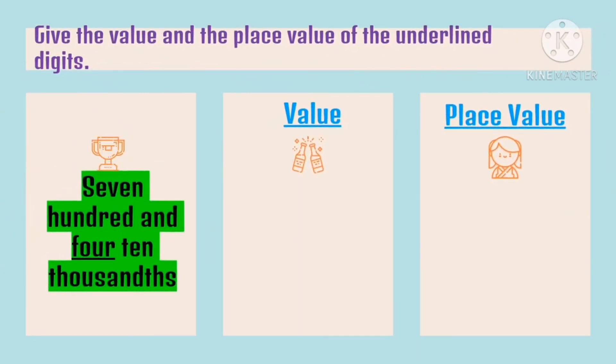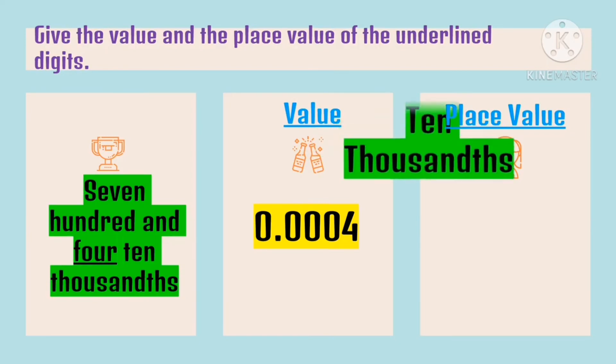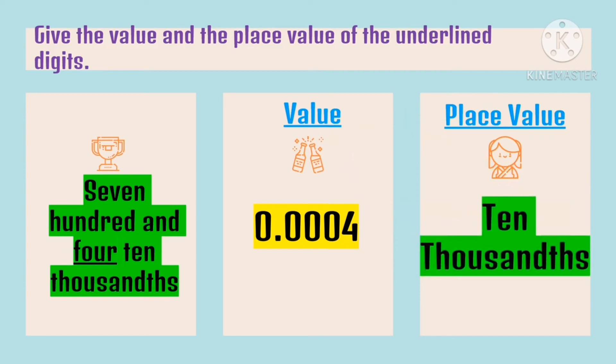Next, give the value and the place value of 700.04. The underlined digit here is four. The value of four is four ten thousandths. We'll place three zeros as place value holders for tenths, hundredths, and thousandths, because the place value of four is ten thousandths. The place value of four is ten thousandths.